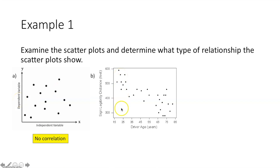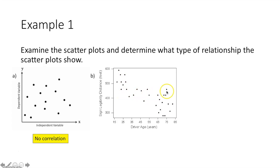For B, the graph is going down and to the right, so it's a negative correlation. Is it weak, strong, or perfect? I can't draw a line through all the points, so it's not perfect. The points aren't forming anywhere near a straight line — they're pretty scattered out — so this graph has a weak negative correlation.